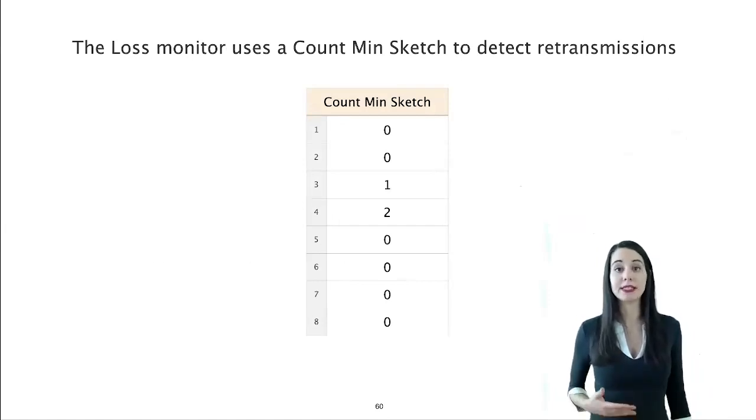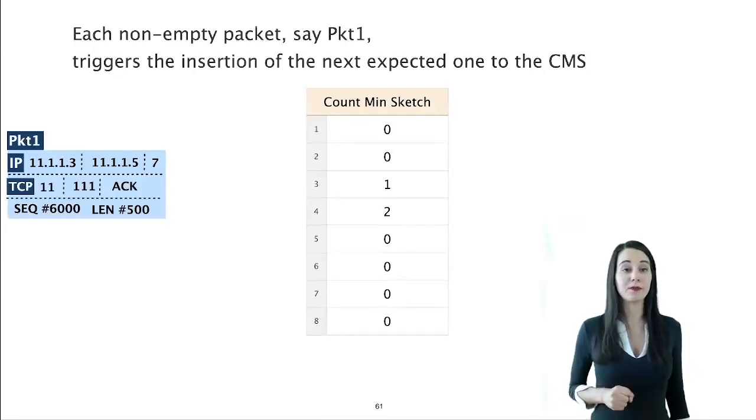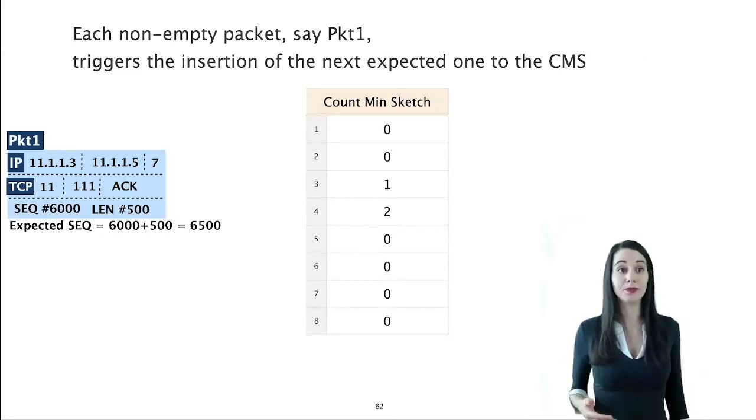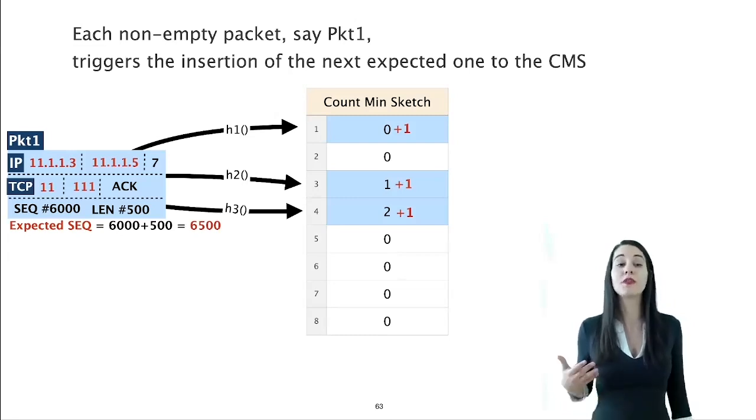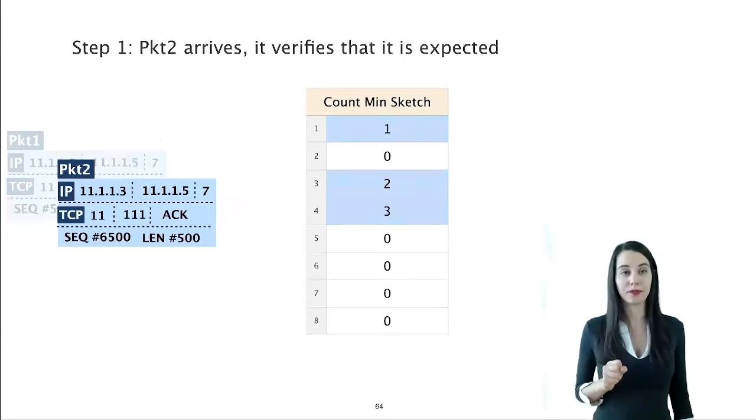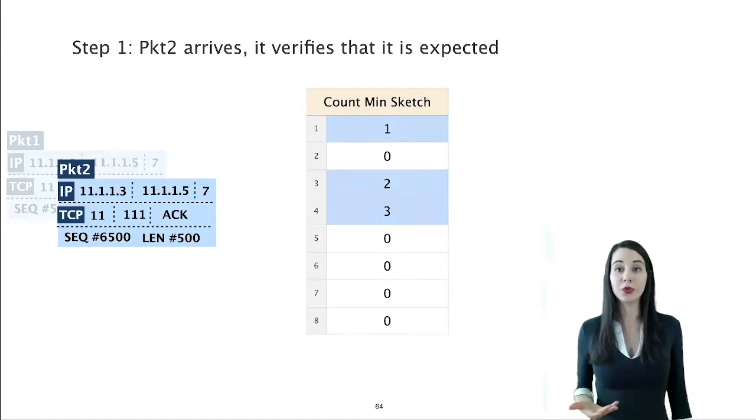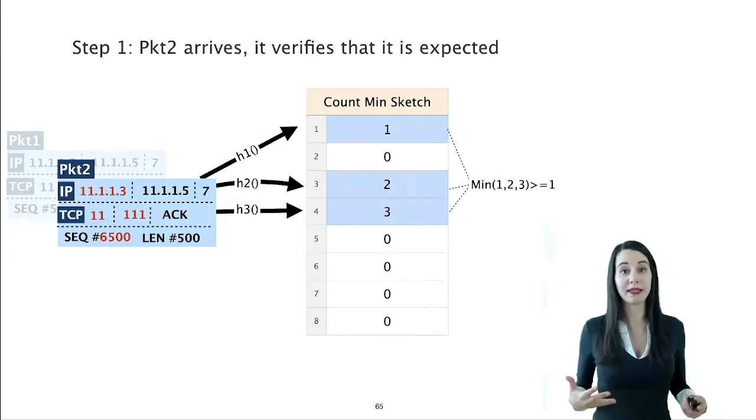Let's now see how it works. Let's assume that the state of the CMS is the one shown in the slide just before packet 1 arrives. Packet 1 is just a regular TCP packet with a non-empty payload. The loss monitor first calculates the sequence number of the next packet in the same flow as packet 1. To that end, the loss monitor adds the sequence number of packet 1 and its TCP length. Next, the loss monitor inserts the next expected packet into the CMS. To do so, it increases three counters. To find the indexes of those counters, it hashes the expected sequence number together with the flow ID, which is source-destination port and source-destination TCP ports. I have colored the fields that are used for hashing in red in the slide.